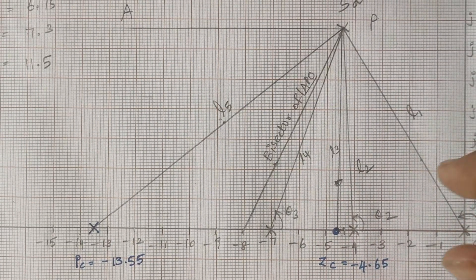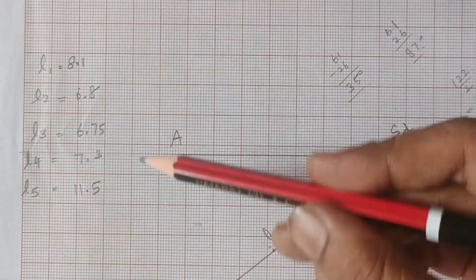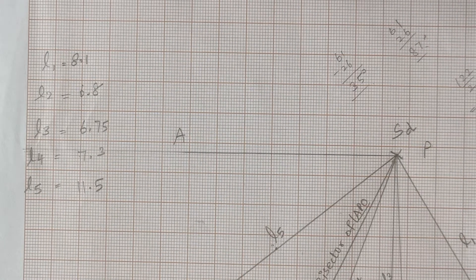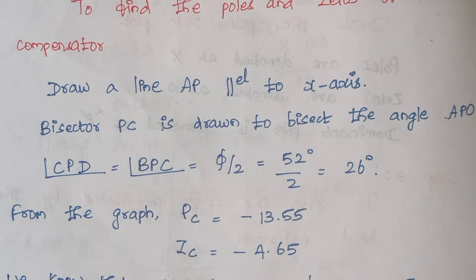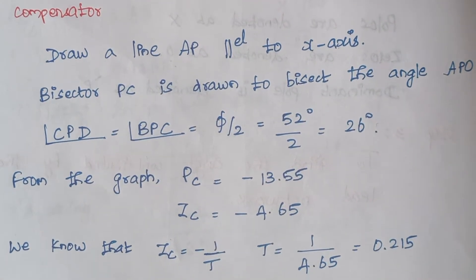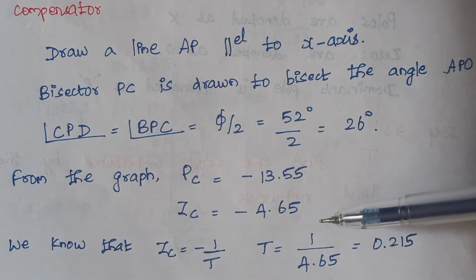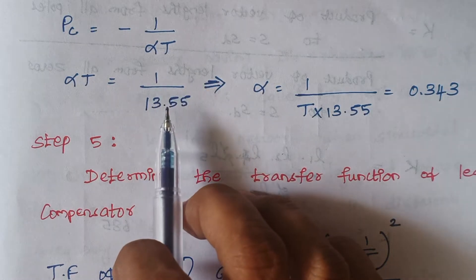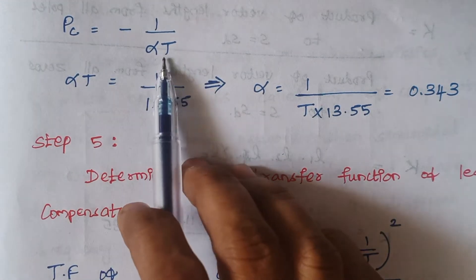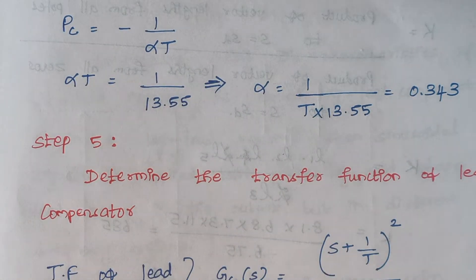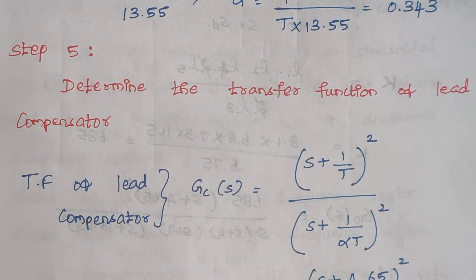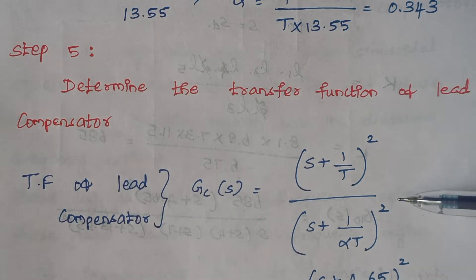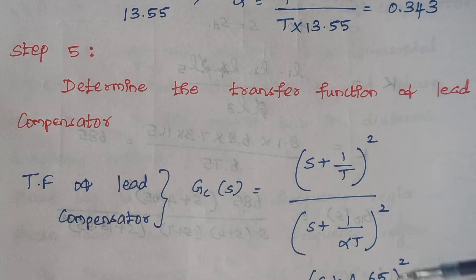From the graph, we find the compensator zero Zc = minus 1/T. Substituting the value of Zc, T is found to be 0.215. The compensator pole Pc = minus 1/(alpha*T). Since we know both Pc and T, we substitute to find the value of alpha.